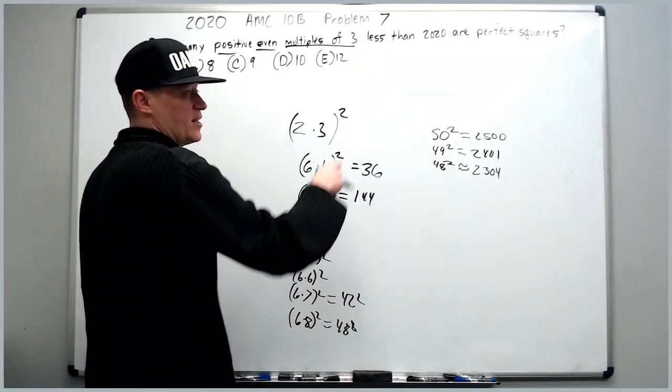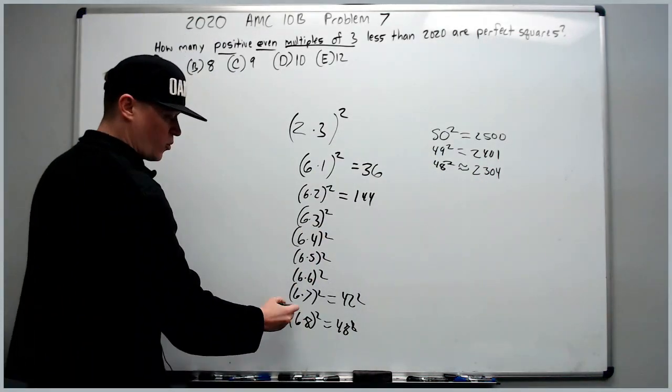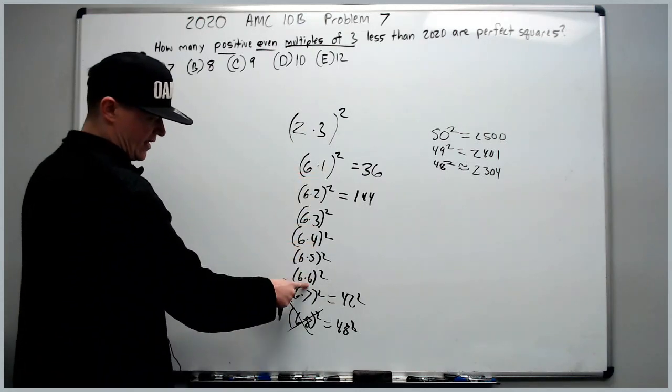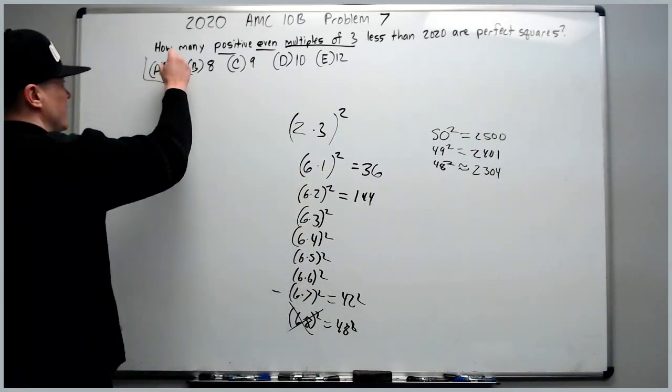It's bigger than 2020. 48 squared is out. We've got one, two, three, four, five, six, seven. The answer is A.